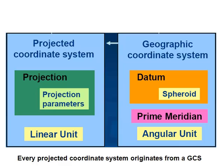A planar coordinate system is also called a projected coordinate system, and it has linear units — so it could be meters or feet — in terms of the XY coordinate system. It's important to remember that the planar or projected coordinate system is always based on some geographic coordinate system, which is based on some datum, which has a spheroid — basically what's the assumed shape of the globe.